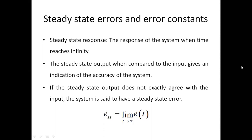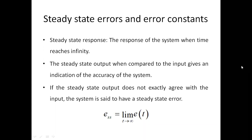The steady state response is the response of the system when time reaches infinity. The steady state output, when compared to the input, gives an indication of the accuracy of the system. If the steady state output does not exactly agree with the input, then the system is said to have a steady state error, defined as E_ss equal to the limit as t tends to infinity of e(t).